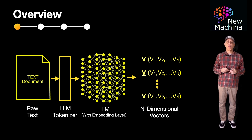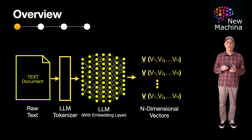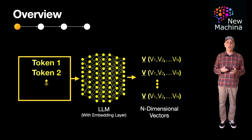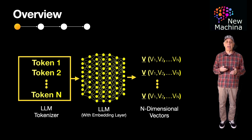So what does the embedding generation process look like? Step one is the tokenization process. In this process, the LLM tokenizer converts raw text into tokens. In step two, the embedding process, each token is mapped to an n-dimensional vector through an embedding layer in the LLM. The result of step two is a generation of an embedding, which in the example of a text document is a sequence of vectors where each vector corresponds to a token and captures its meaning in n-dimensional space.